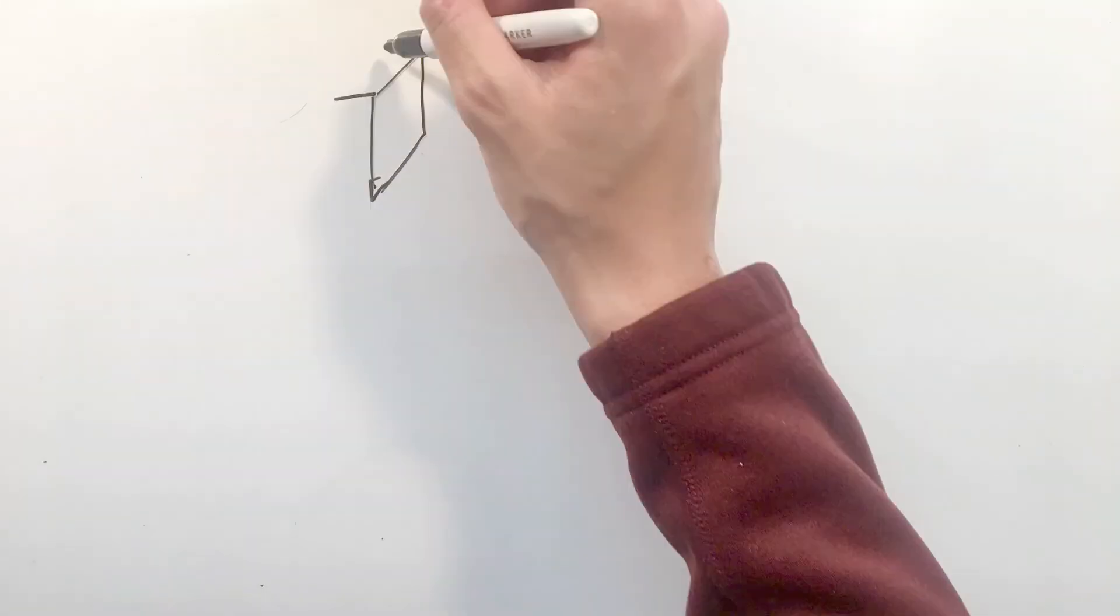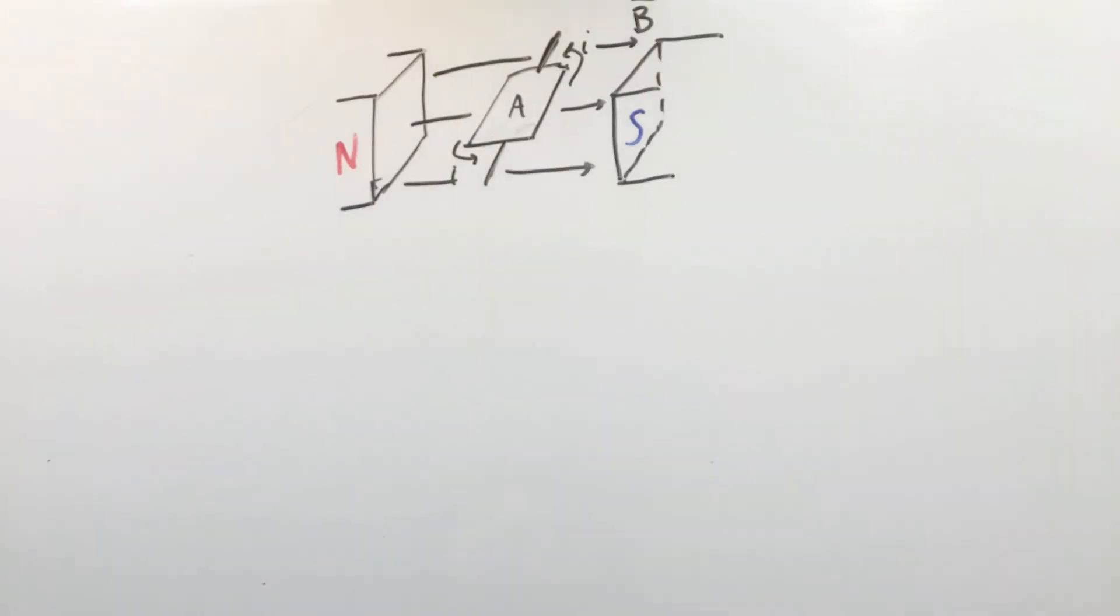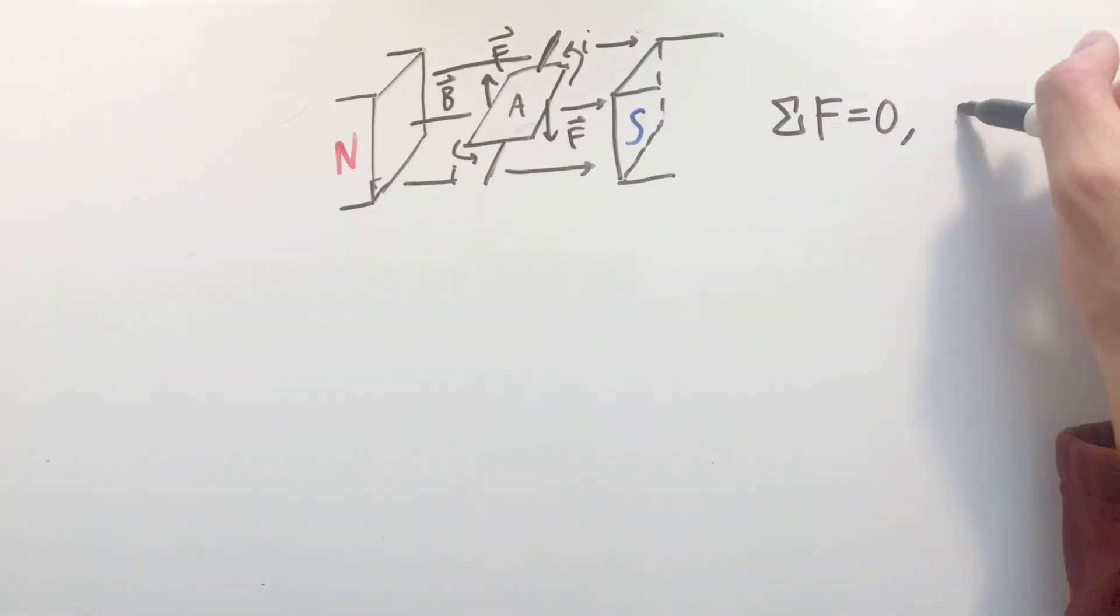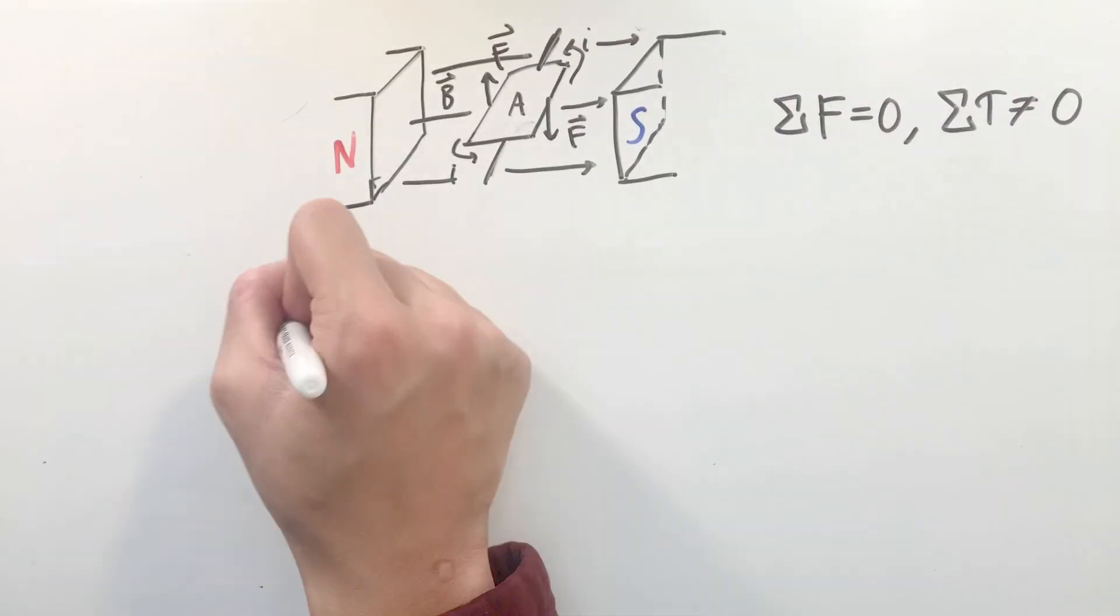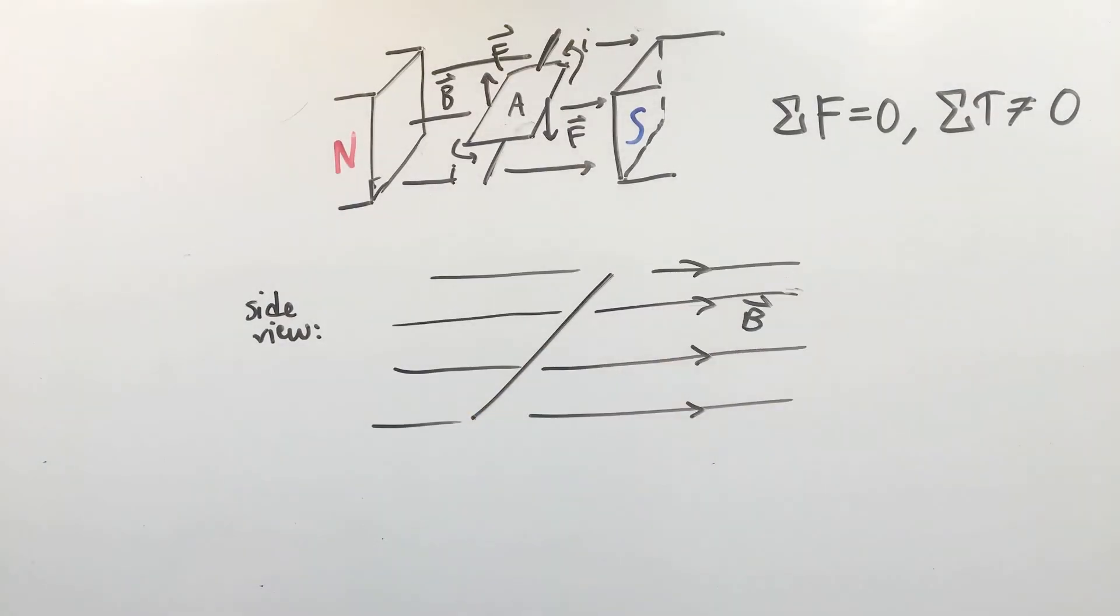One final application is when we look at a loop or coil of wire placed in a magnetic field. Though after some inspection it's obvious that the forces on all four sides of this rectangle cancel each other out, creating a force of zero, a torque is actually created due to the magnetic forces. In fact, the torque on a coil or loop of wire is related to the number of coils, current, area, magnetic field, and orientation of this coil.